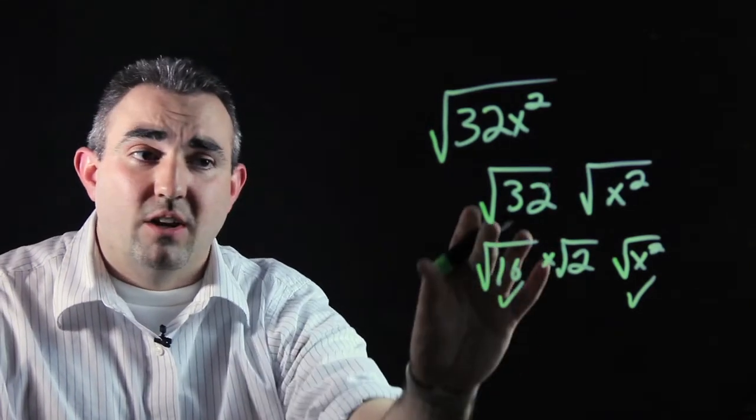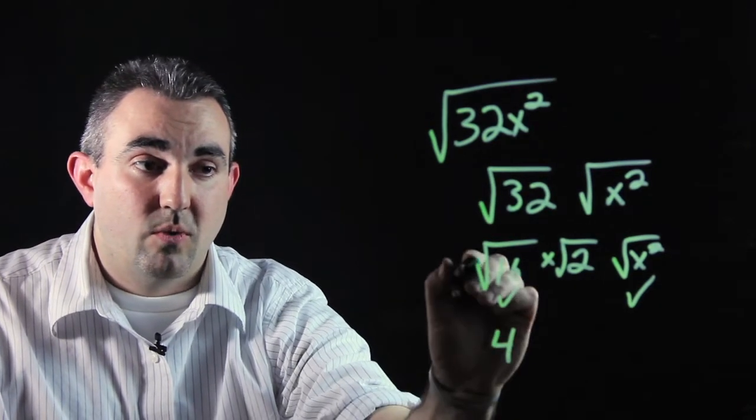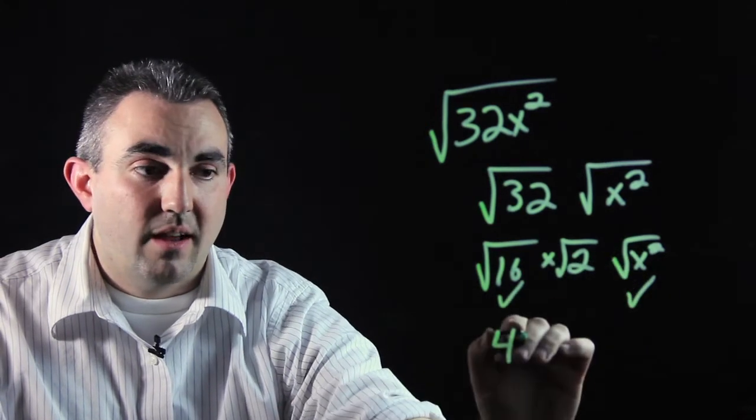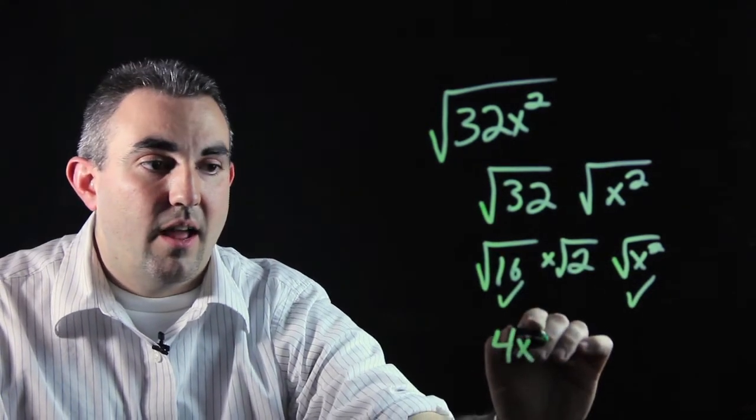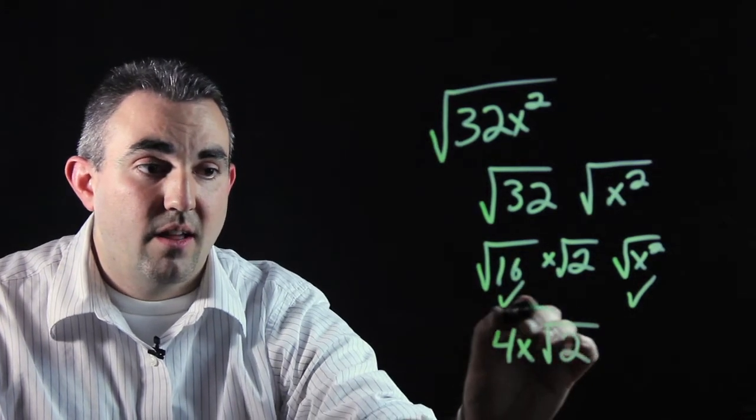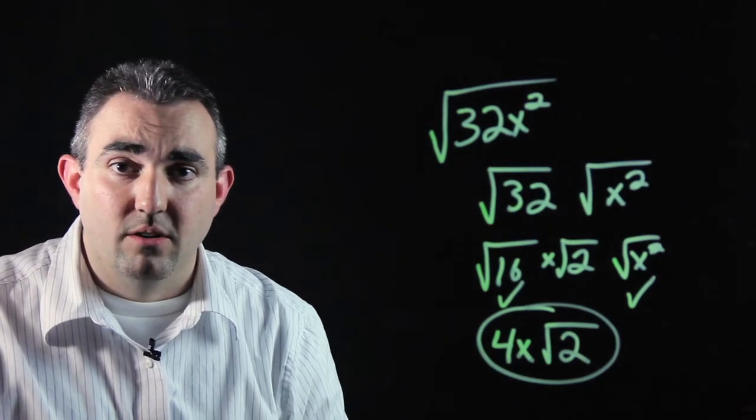So the 16 we're going to take, 4 times 4 gives you 16. So the square root of 16 is 4. The square root of x squared, x times x, is x. And you're left over with this non-perfect square here. This is the simplest form of our 32x squared in the radical symbol.